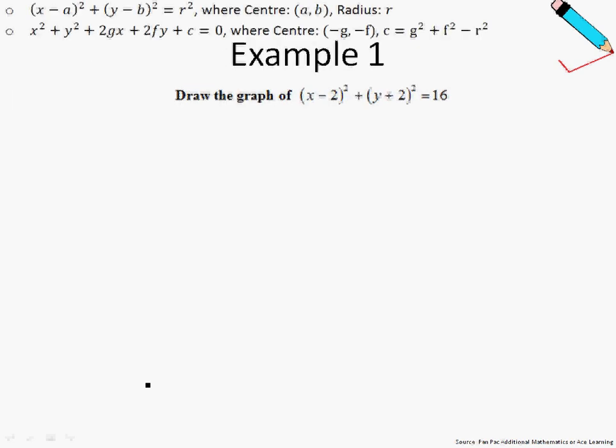So in example number one, we are asked to draw the graph of this equation. The first thing we want to do is to realize that this given equation is in the form of formula number one. Formula number one you can see over here. So let's just identify our a, which is 2.